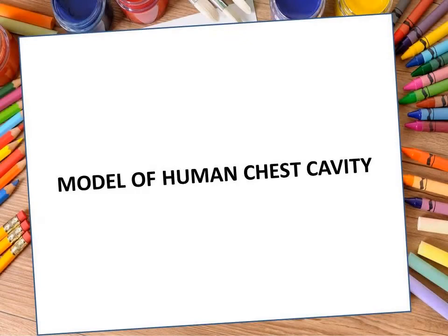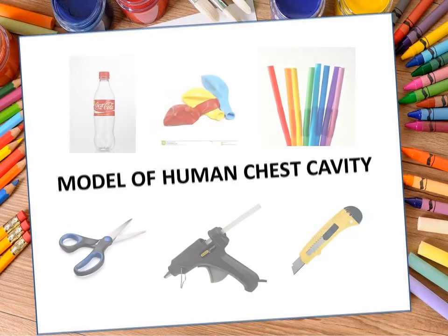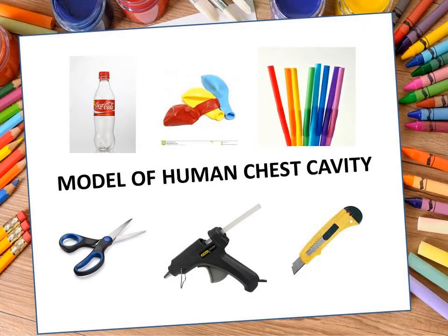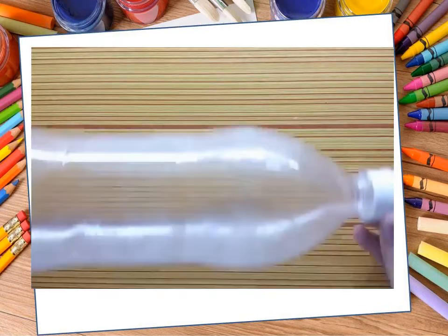To explain this mechanism, I will first construct a model of the human chest cavity. The materials needed are the following: an empty plastic bottle, balloons, straws, a pair of scissors, a glue gun, and a cutter. Just follow the procedures in constructing.